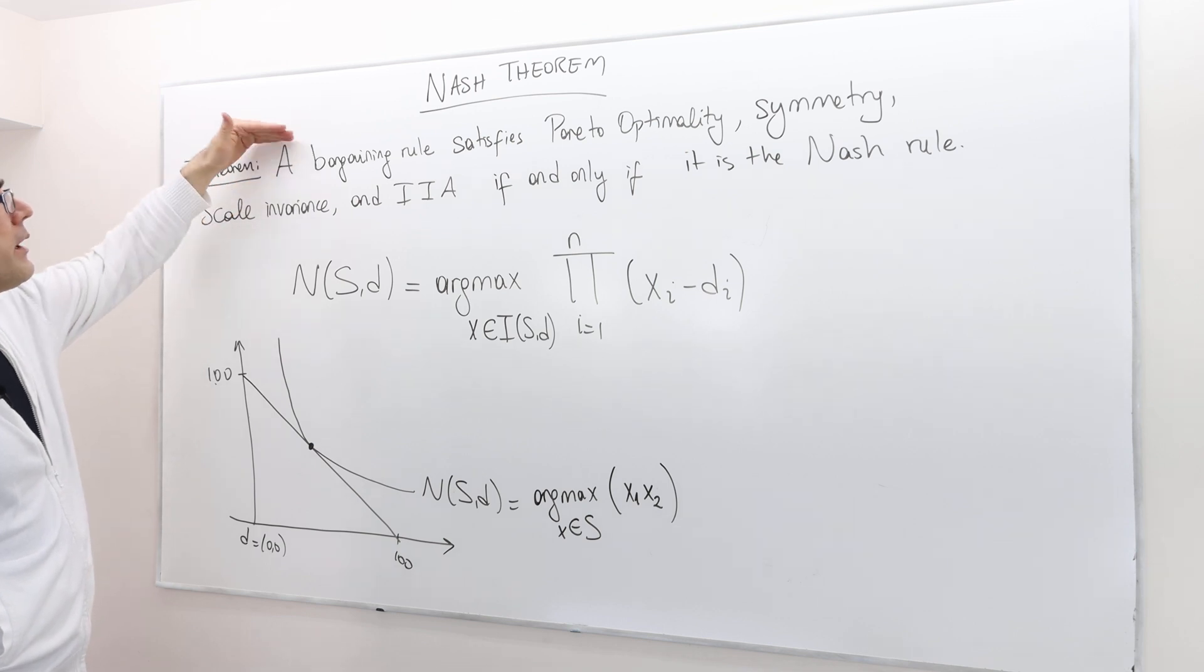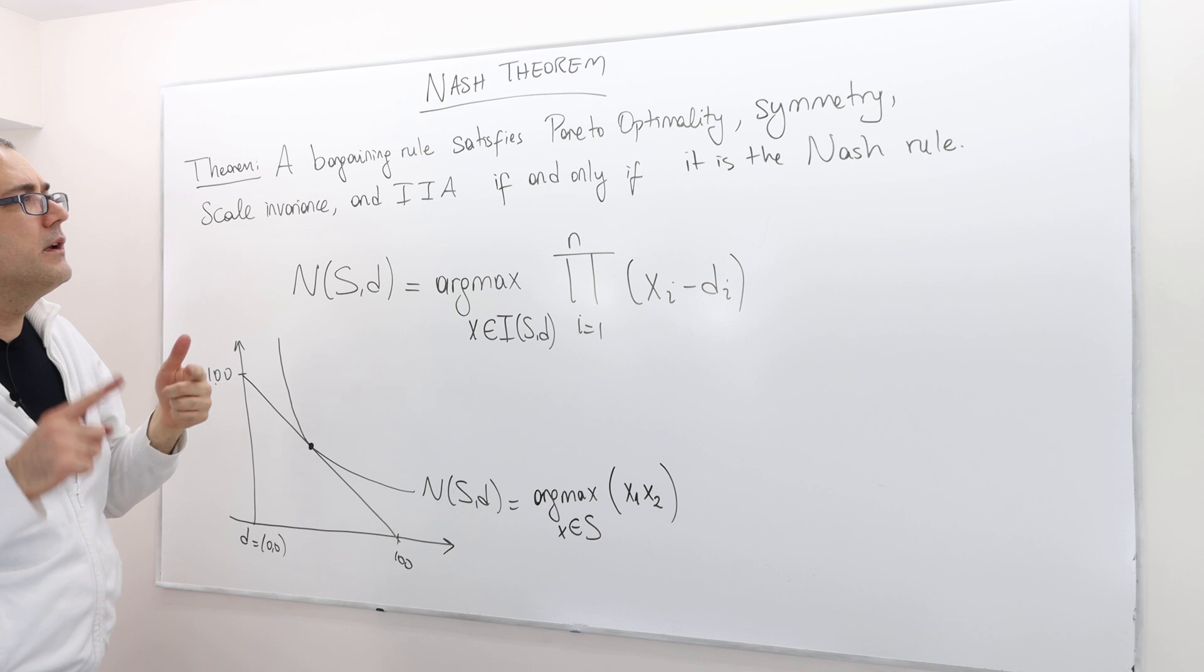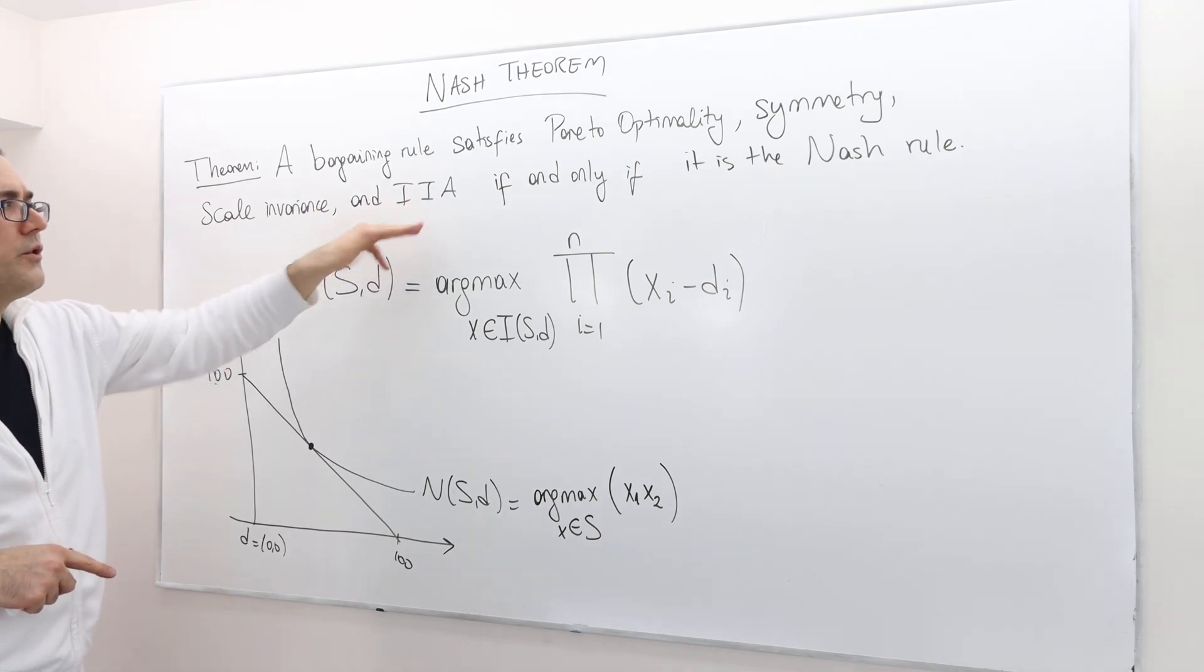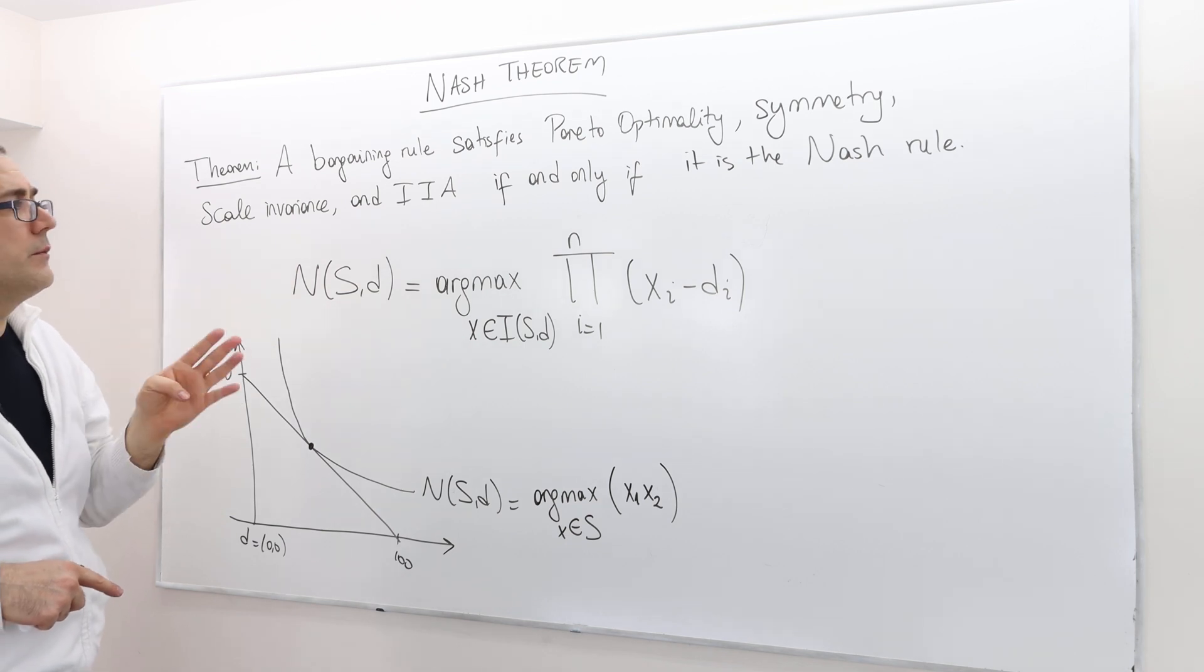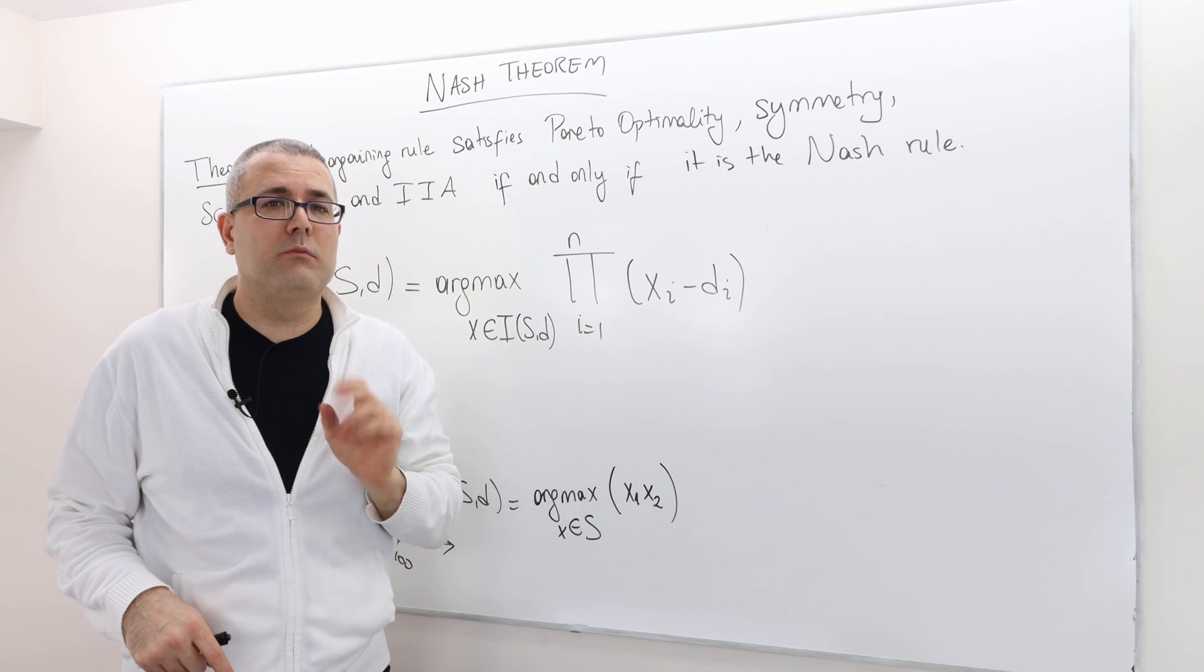So he says, a bargaining rule satisfies Pareto-optimality, symmetry, scale invariance, and independence of irrelevant alternatives, those four axioms, if and only if it is the Nash Rule.